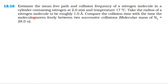From the insider test book, from the topic kinetic theory, exercise 13.1. Estimate the mean free path and collision frequency of a nitrogen molecule in a cylinder containing nitrogen at 2 atm and temperature 17 degrees centigrade. Take the radius of a nitrogen molecule to be roughly 1 angstrom. Compare the collision time with the time the molecule moves freely between two successive collisions. Molecular mass of nitrogen is 28 atomic mass units.